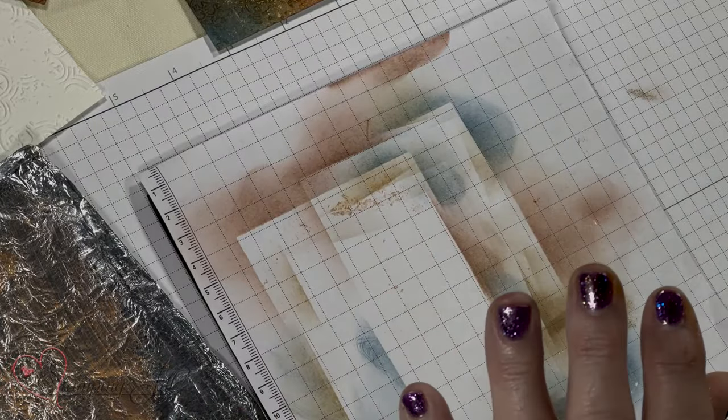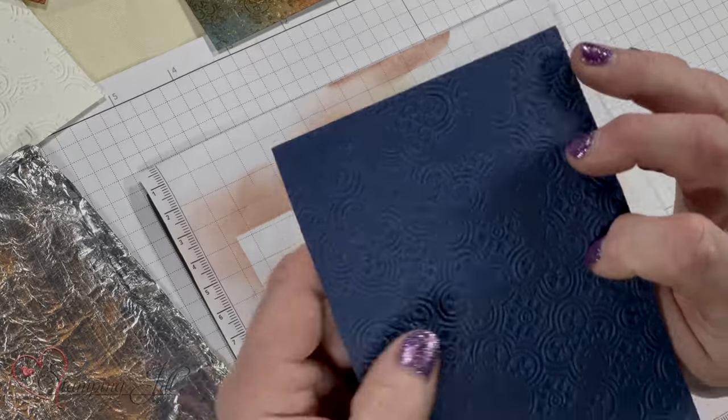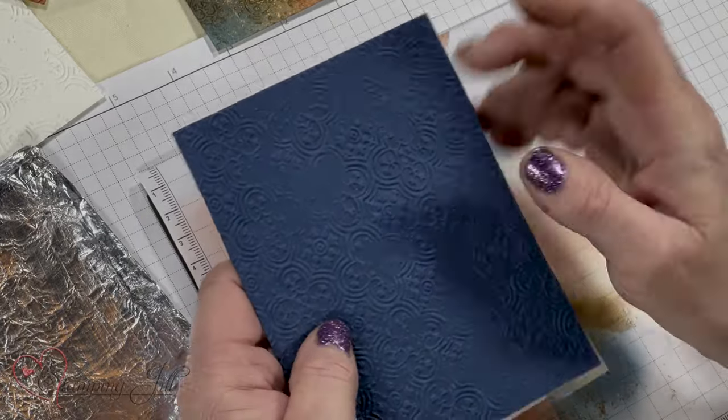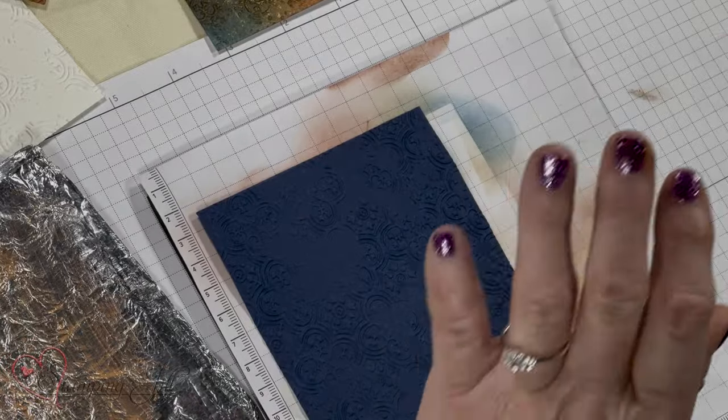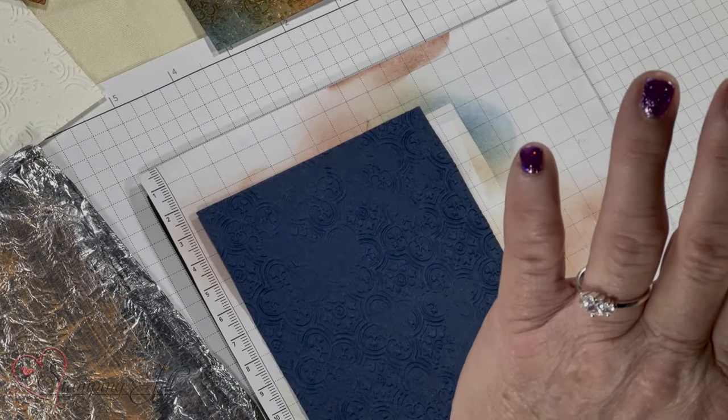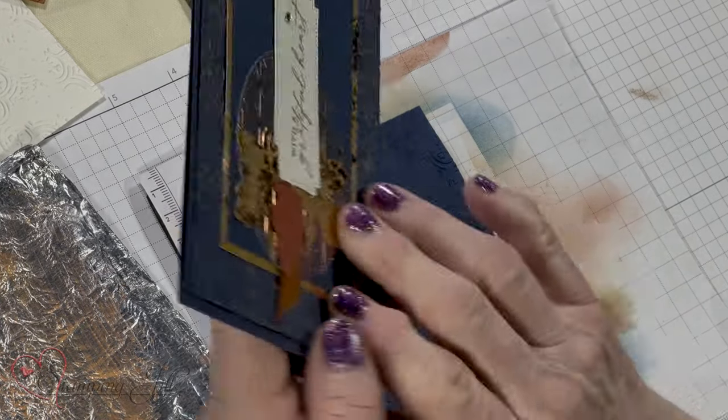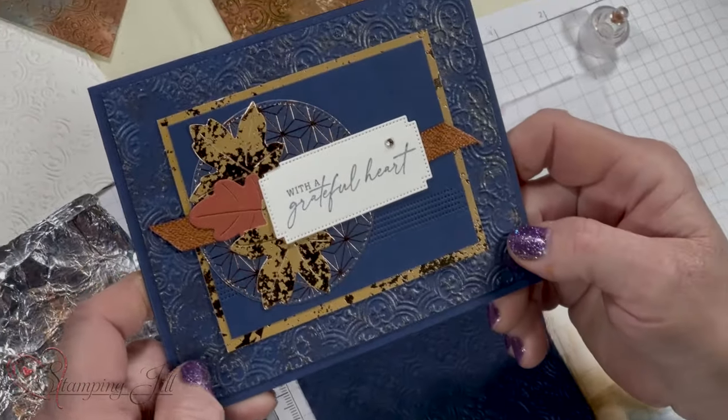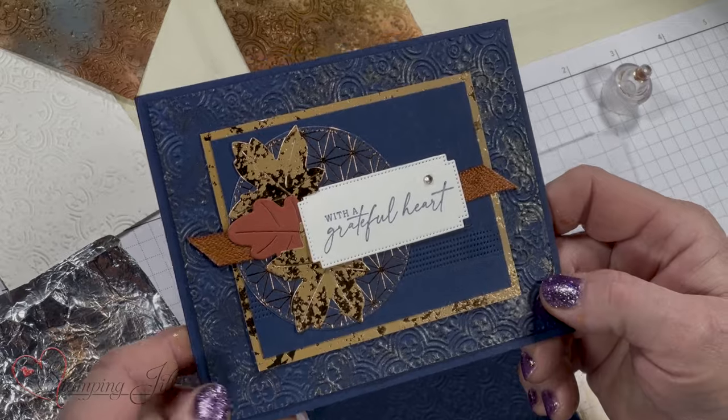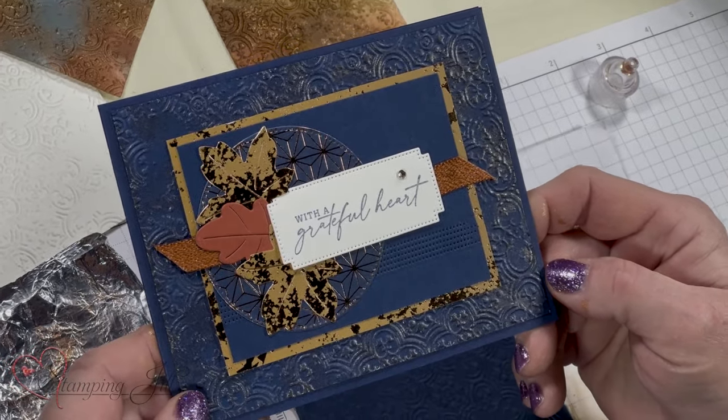So that is using that. We're going to also try it on solid cardstock. This is the distress tile embossing folder. And I have another card here that I use it on.